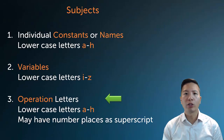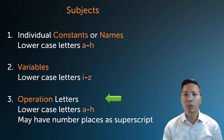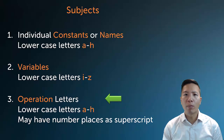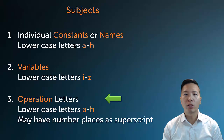When we first introduced predicate logic, we mentioned two things we were going to defer until we hit multi-place predicate logic. The first of those is operations. Operation letters are lowercase a through h with a superscript, and these operations represent subjects. So what is an operation? Let's look.